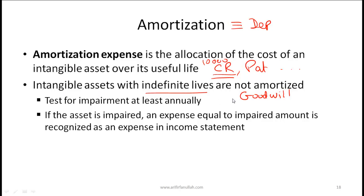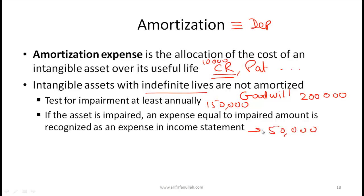Goodwill, as an intangible asset with an indefinite life, does not get amortized. Instead, you must test it for impairment at least annually. If you initially recorded goodwill at $200,000 but upon testing determine it is now worth only $150,000, the asset has declined by $50,000. That $50,000 is recognized as an impairment expense in the income statement.